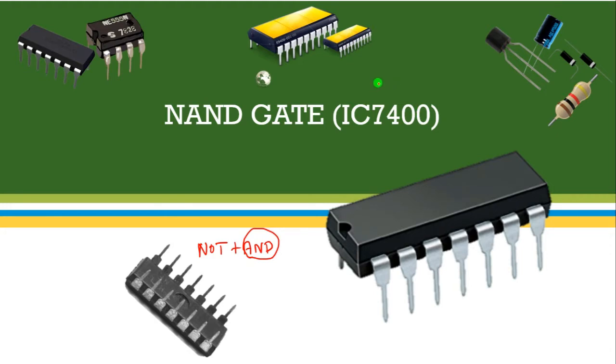The IC number of the AND gate is 7408 — 08 is for the AND gate. The NAND gate IC is IC 7400.